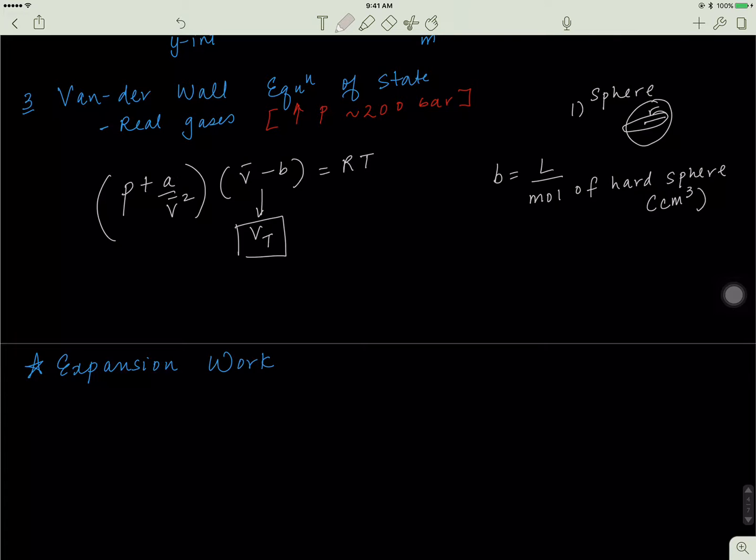Then the pressure - let's rearrange this equation. We move this V bar minus B to the denominator and then we move A over V squared and it turns into a negative sign. We'll see pressure is actually reduced in this case and the idea behind that is there's some attractive forces between the particles so they're not hitting the wall as much because they're being attracted to each other.